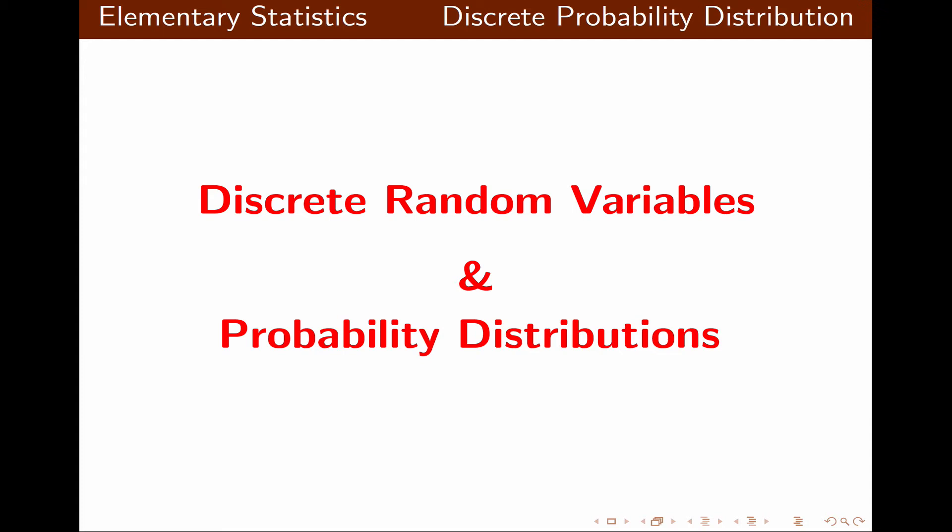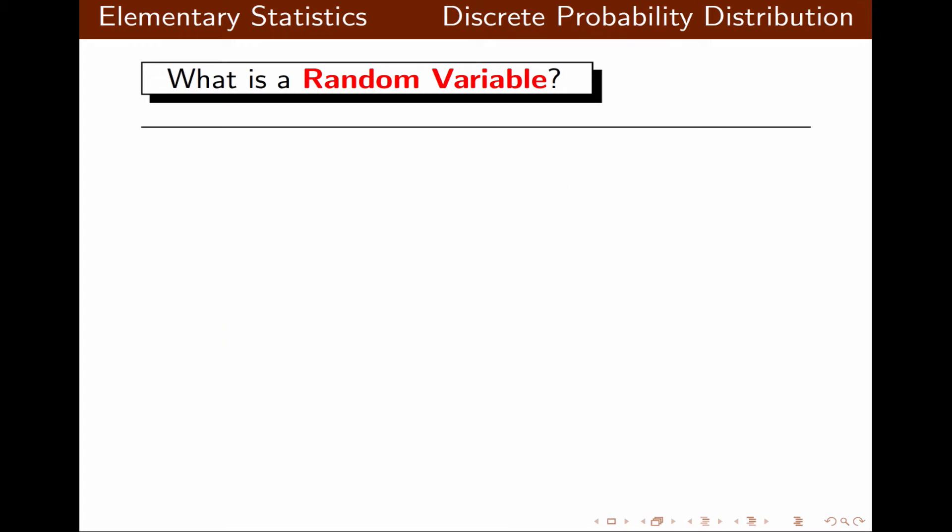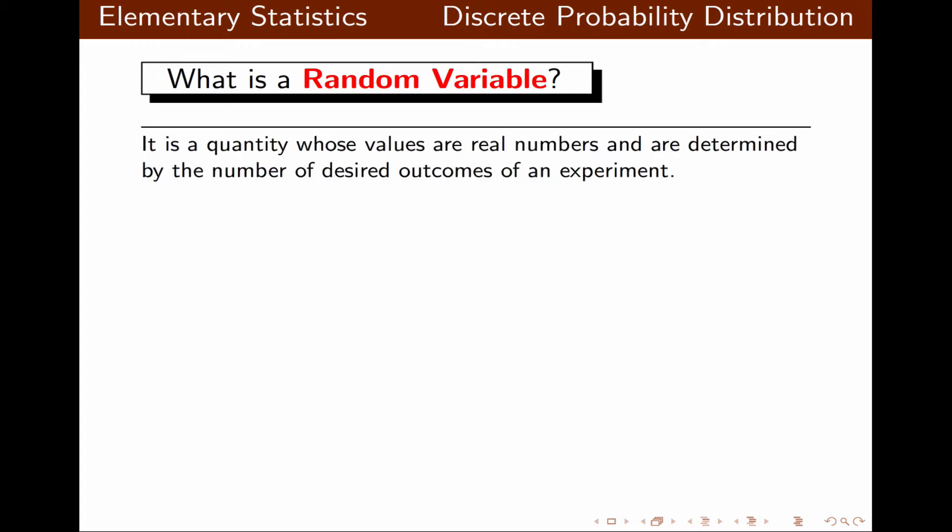In this video presentation, we're going to talk about discrete random variables and probability distributions. First, let's take a look at the definition of a random variable. It's a quantity whose values are real numbers and are determined by the number of desired outcomes in an experiment.